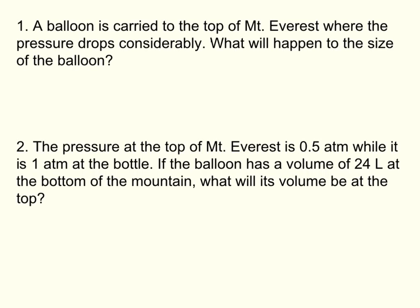Well, let's see. What is happening? We've got a balloon here. We're taking it to the top of Mount Everest, and the pressure is dropping. So, pressure is going down. The problem is asking, what's going to happen to the size of the balloon? Size, remember, is volume. So, we're relating pressure and volume here. We know that if pressure goes down, volume must go up, because they are indirectly related. So, we would say the volume of the balloon would increase.